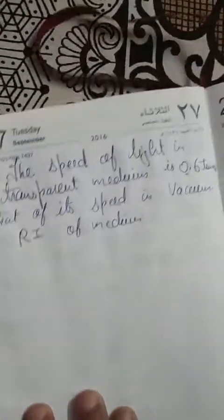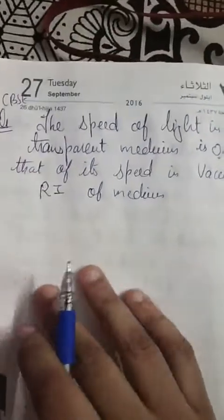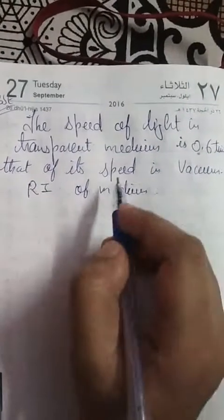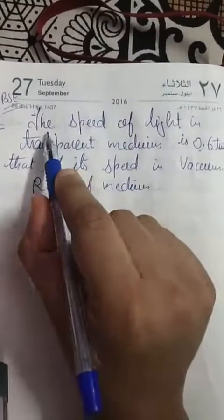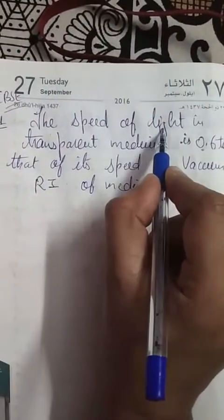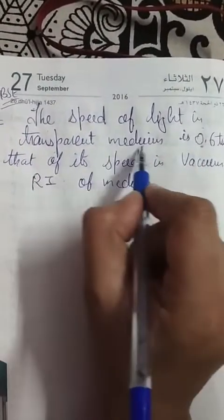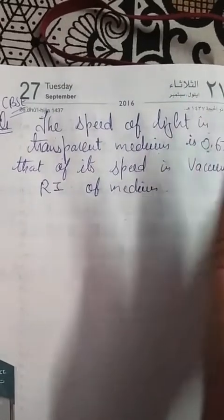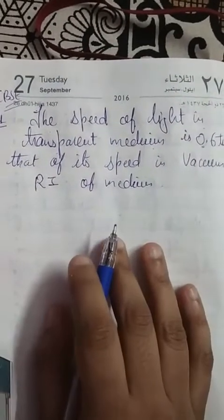Welcome students, my name is Arwa and my channel name is Arwa and Physics. This is a CBC question based on refractive index. They said the speed of light in a transparent medium — let's say the medium will be glass.